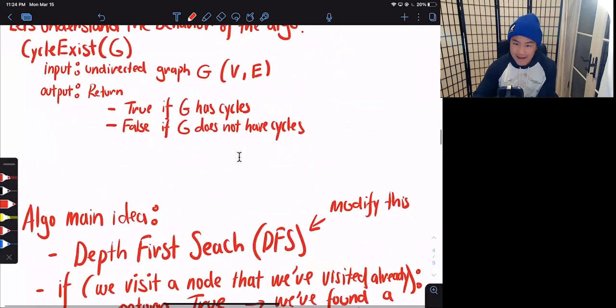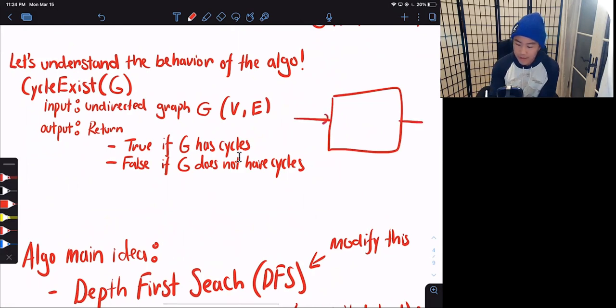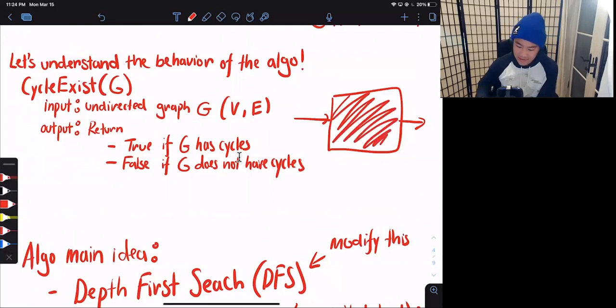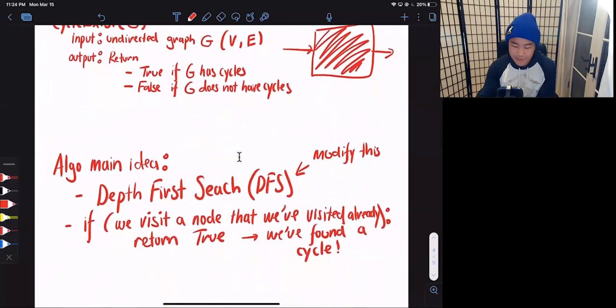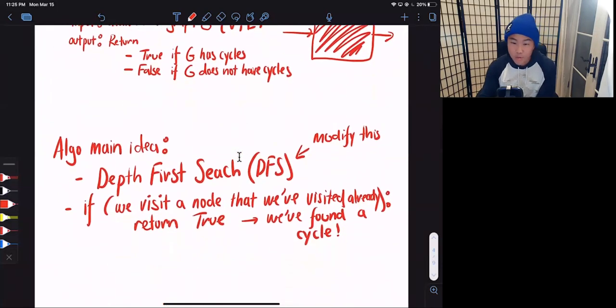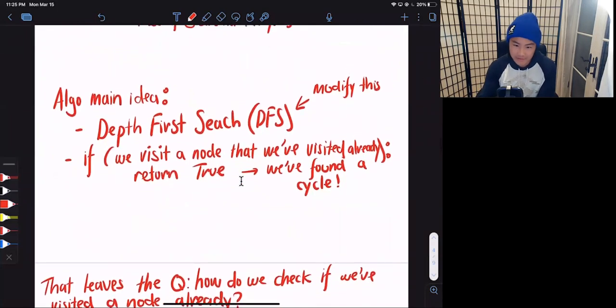Okay, so that is the behavior of the algorithm. You can imagine this algorithm as a black box. And we know the inputs, we know the outputs. Now, what we're trying to do is explain what's actually inside this black box. So let's do it. Here's the algorithm for the main idea.